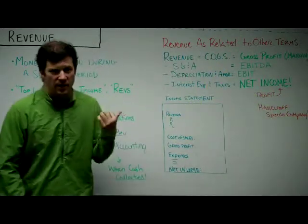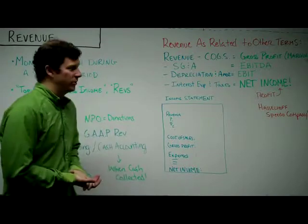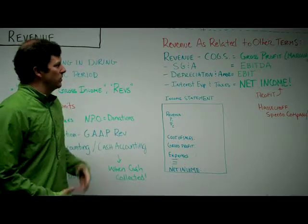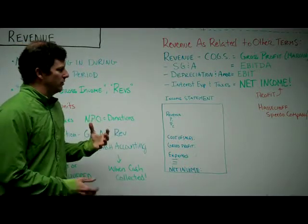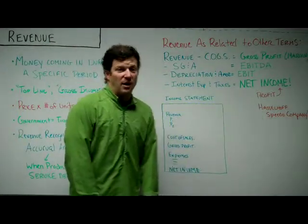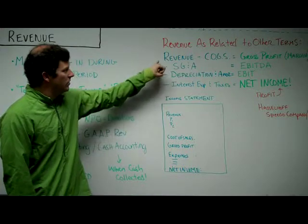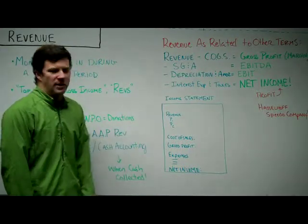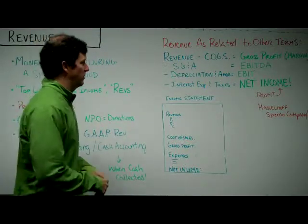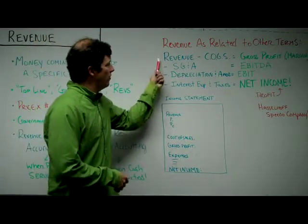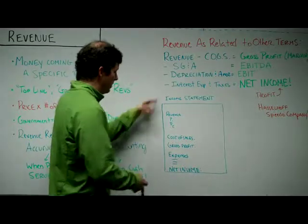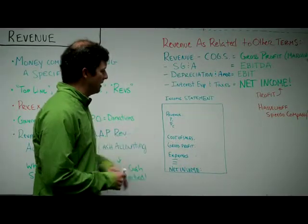There will be videos on each of those accounting methods for more detail. Now let's look at revenue as it relates to other terms — it's important to understand it contextually. In order to figure out net income or profit, you start with revenue. Basically, to figure out every term on the income statement, you're going to start with revenue. Revenue is the building block for most of these terms. You start with revenue over a period of time, then subtract cost of goods sold to get gross profit or gross margin.